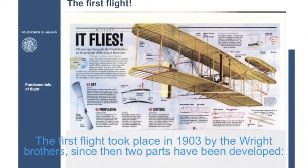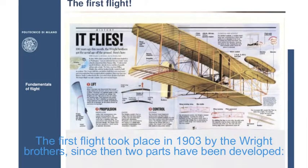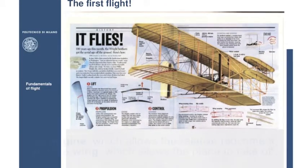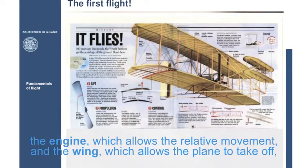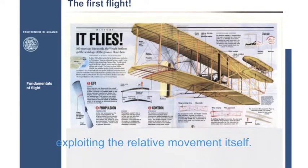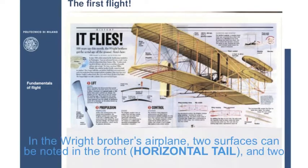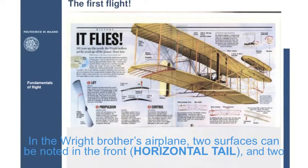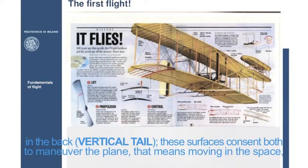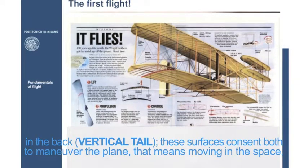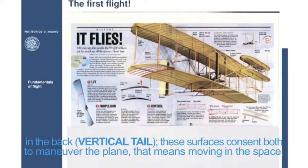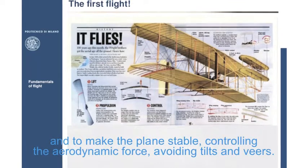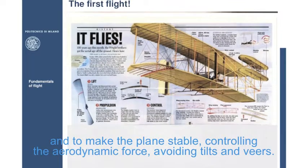The first flight took place in 1903 by the Wright brothers. Since then, two parts have been developed. The engine, which allows the relative movement, and the wing, which allows the plane to take off, exploiting the relative movement itself. In the Wright brothers airplane, two surfaces can be noticed in the front, horizontal tail, and two in the back, vertical tail. These surfaces consent both to maneuver the plane, that means moving in the space, and to make the plane stable, controlling the aerodynamic force, avoiding tilts and weirs.